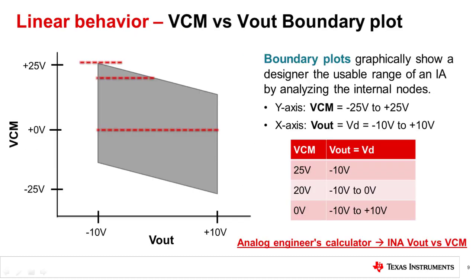Boundary plots graphically show a designer the usable range of an IA by analyzing the internal nodes. Since linear behavior depends on the input and output range in the amplifier, the boundary plot represents these ranges by plotting the combination of every headroom limit, including the common mode input voltage and the output voltage. The boundary plot shows the achievable output voltage range for any given input common mode voltage at V1 and V2, or equivalently, the input common mode voltage range for which a given output voltage can be produced. The y-axis is VCM and the x-axis is Vout.